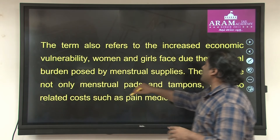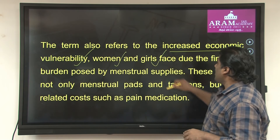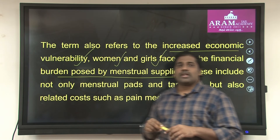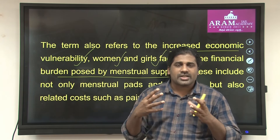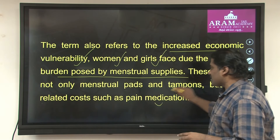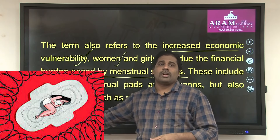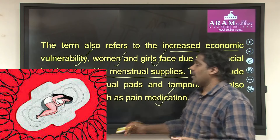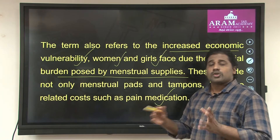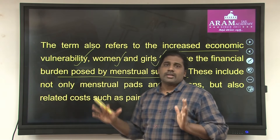The term also refers to increased economic vulnerability that women and girls face due to the financial burden posed by menstrual supplies. During the menstruation timeline, they need certain products like pads and pain medication. They are vulnerable and have no economic resources in their hand, so we need to improve the economy to somehow manage this period poverty.